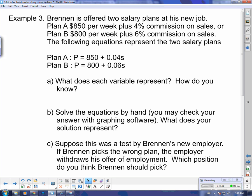Brendan is offered two salary plans at his new job. Plan A is $850 per week plus 4% commission on sales. Or Plan B is $800 per week plus 6% commission on sales. The following equations represent the two salary plans. So you can take a look at the first one. We've got the $850 to start with. And then this is 4% of the sales. That's how we put it. And $800 to start with and 6% of the sales.